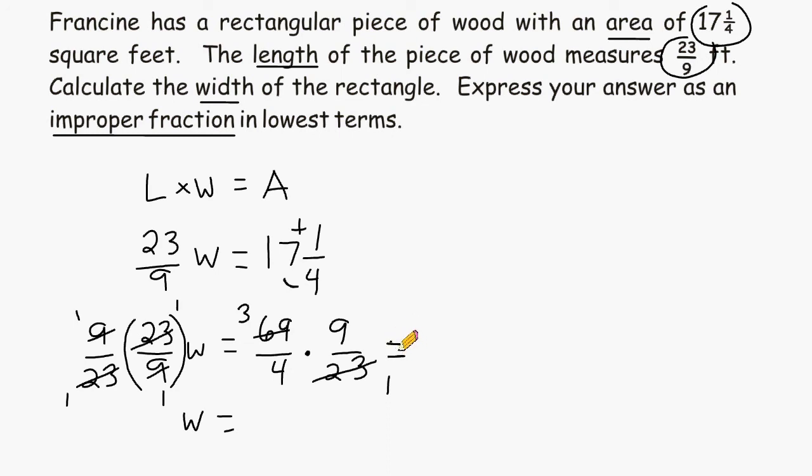So what we have remaining on the top is a 3 and a 9, and that gives us a product of 27. And the denominators 4 and 1 give us a product of 4. So we would say the width of this rectangle is equal to 27 quarters.